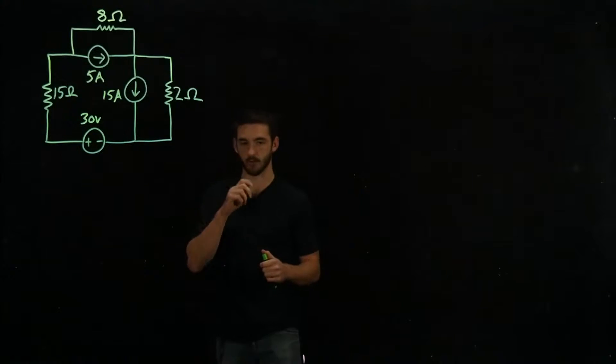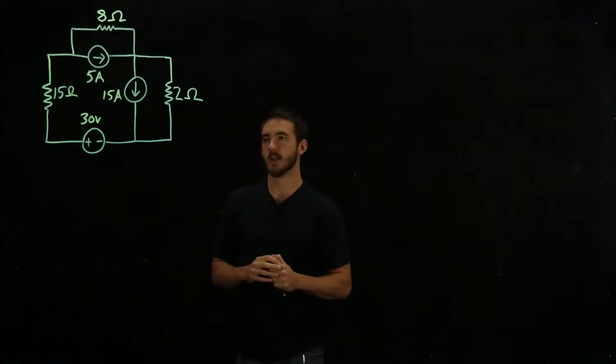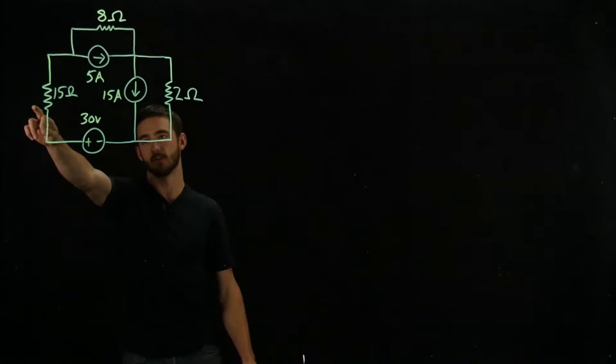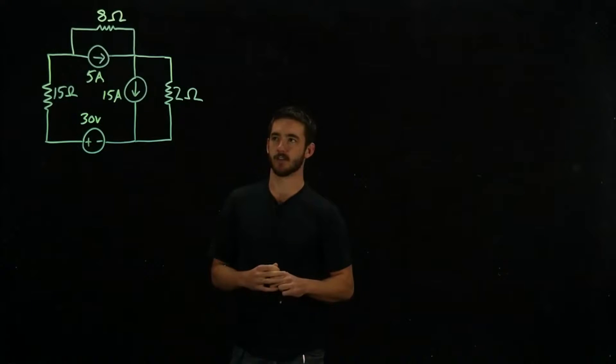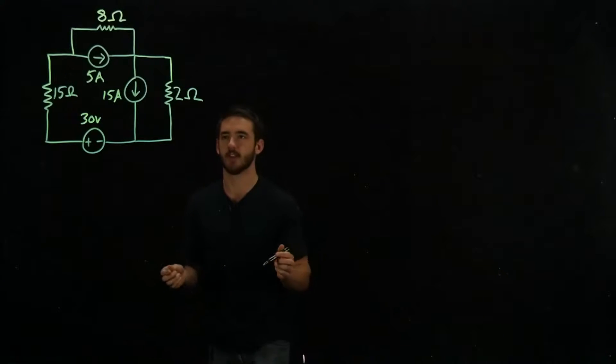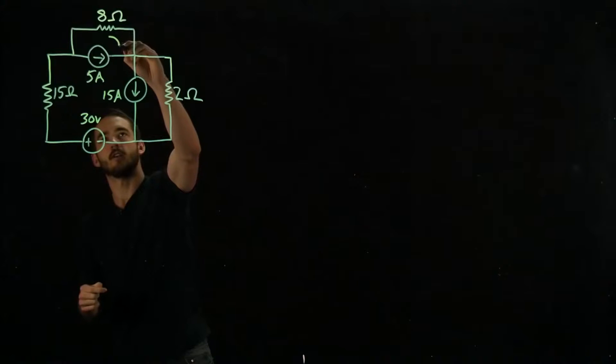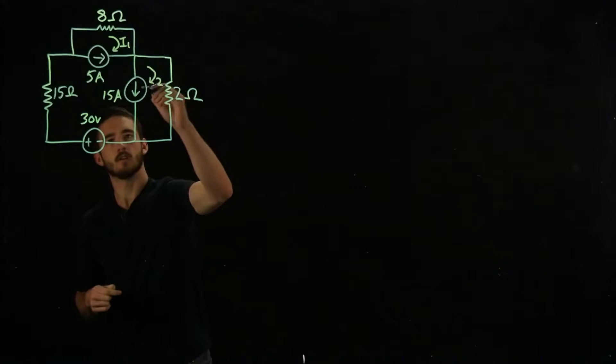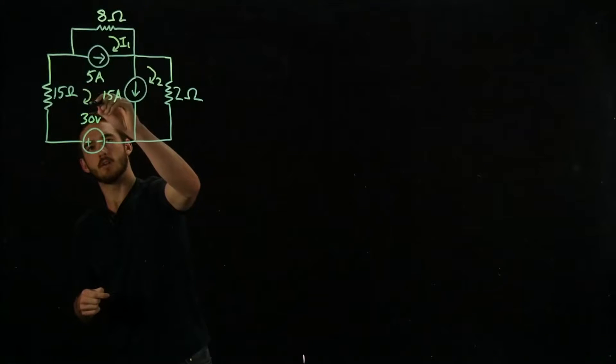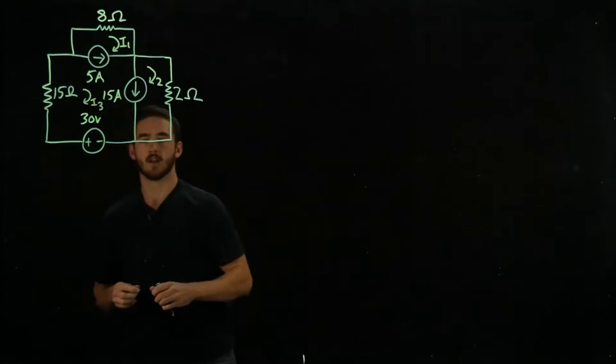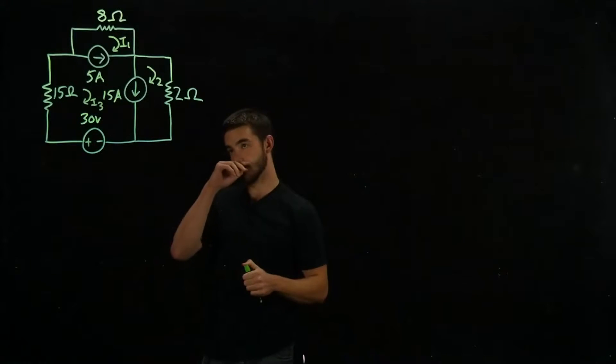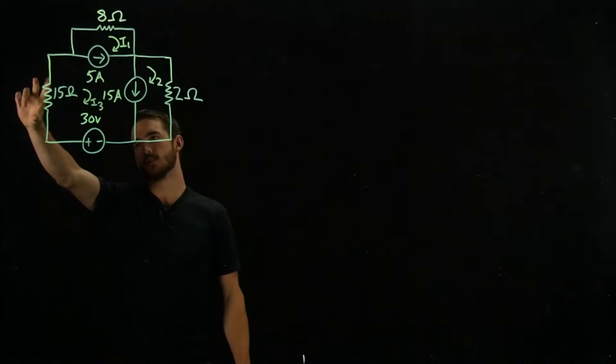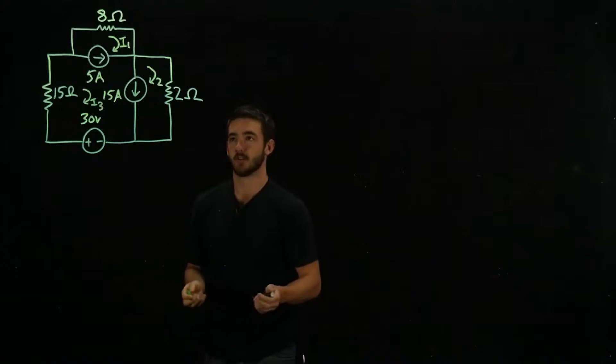So this is going to be a problem for Circuits 1 or ECE-2001. We're going to be solving for the power dissipated across this resistor using mesh analysis. The object of mesh analysis is to find the currents going through each loop. And once we find each of these currents, once we find I3, we can calculate the power that's being dissipated across that resistor. So let's get started.